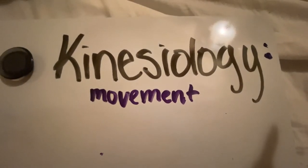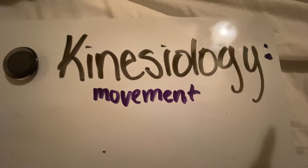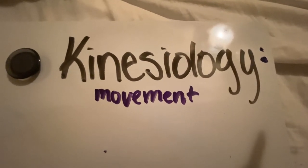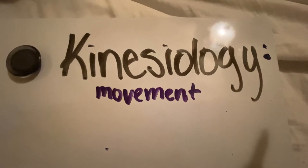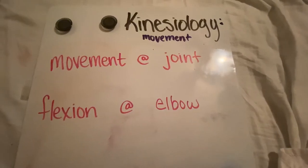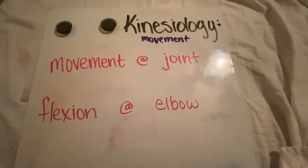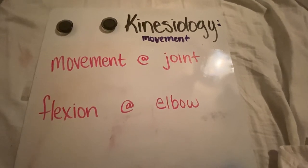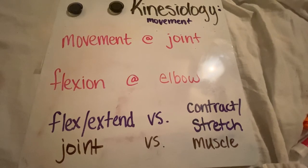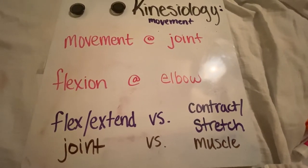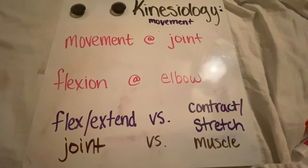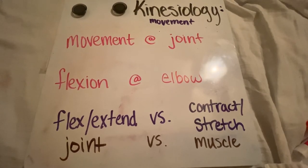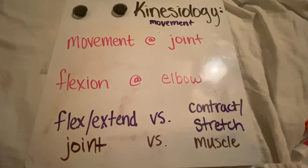When we talk about kinesiology and movements, we talk about things like flexion, extension, abduction, adduction, rotation, inversion, eversion, protraction, and retraction. These movements all happen at synovial joints. Movements are always talked about relative to a joint — so you always say the movement at the joint, for example flexion at the elbow. An important point: joints can flex and extend, while muscles can contract and stretch. A muscle cannot flex and extend — that only happens at the joint.